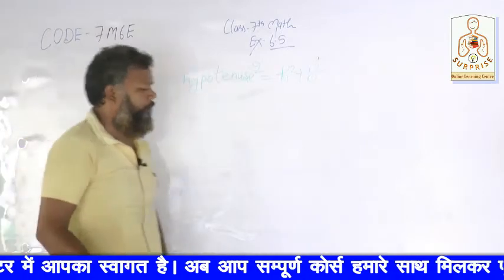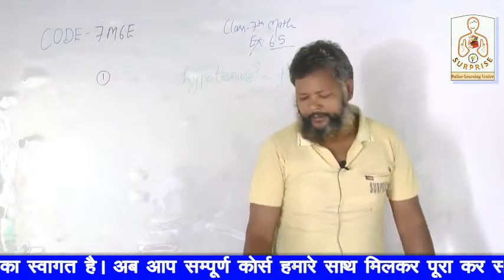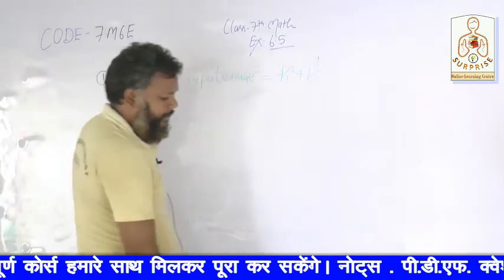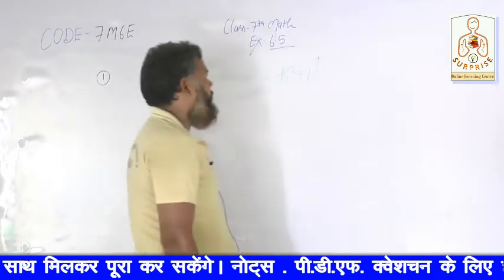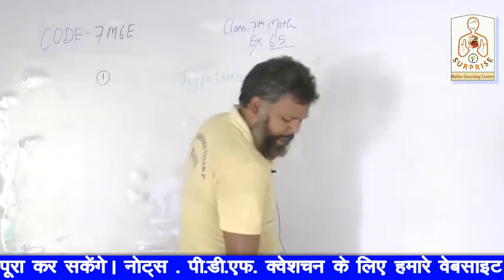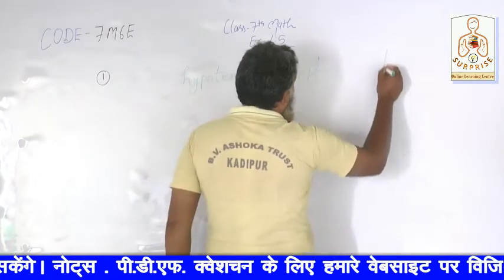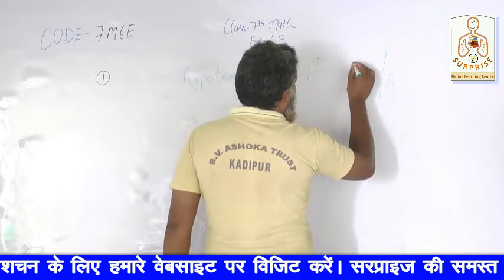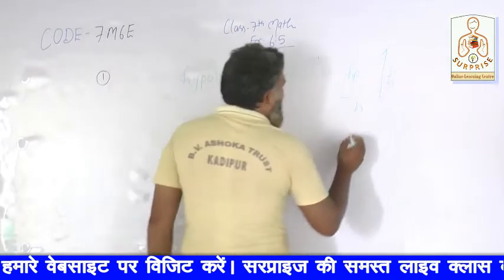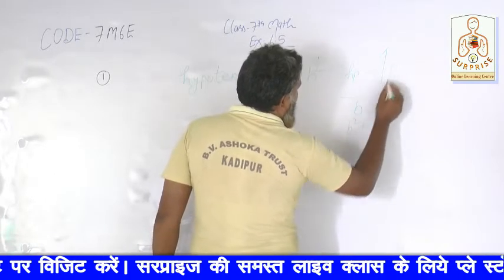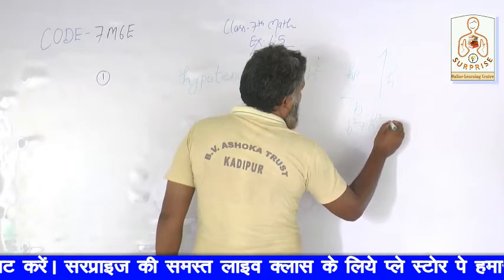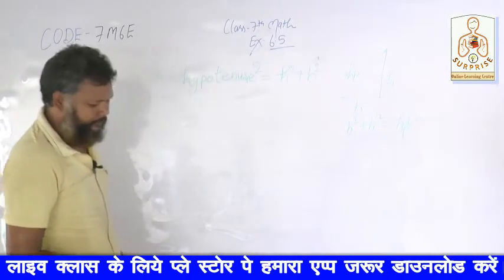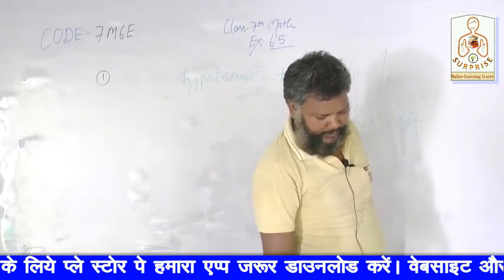a square is equal to height square plus base square. Yani ki kisi bhi right angle triangle hone ki condition ye hai ki — yeh triangle hai, yeh iska base hai, yeh iska height hai, yeh iska hypotenuse hai. Yeh iska square aur iska square ko add karenge iska square aa da. Toh pehle question one ke liye rough figure bana lete hain.